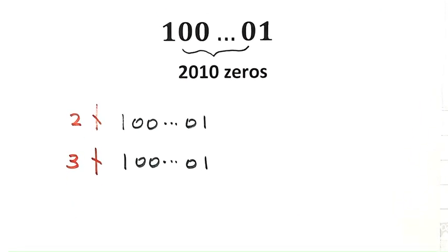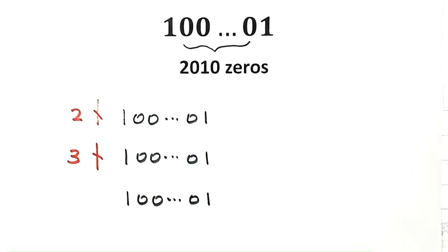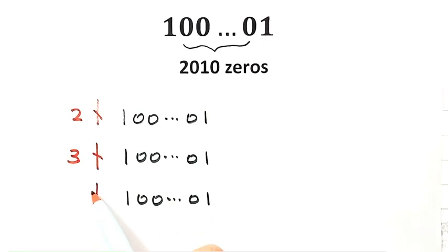Next, let's see if it's divisible by 5. For any number, if it's divisible by 5 then the last digit must be 0 or 5. But here the last digit is 1, not 0 or 5, so this number is not divisible by 5.